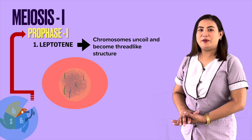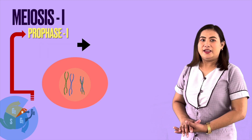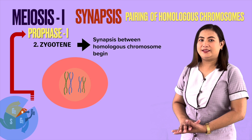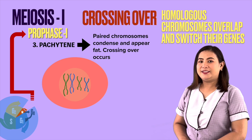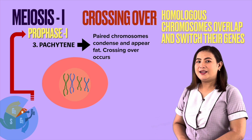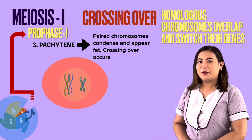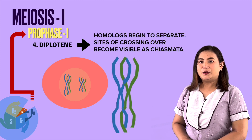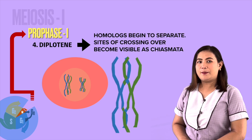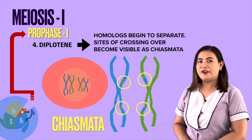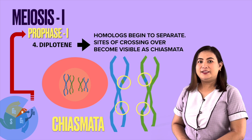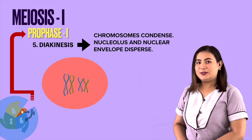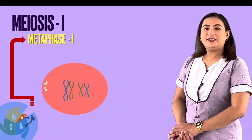In leptotene, chromosomes uncoil and become thread-like structures. In zygotene, synapsis between homologous chromosomes begins. In pachytene, the paired chromosomes, known as homologous chromosomes, are condensed and appear thick. In diplotene, the chromosome pairs begin to separate and form the basis for evolutionary diversity. In diakinesis, chromosomes condense, the nucleus fragments, and nuclear envelopes disperse.